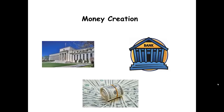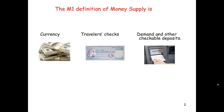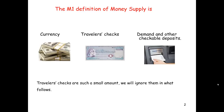Let's begin by defining the money stock we'll think about. That's the M1 definition of money supply, and it's equal to currency plus traveler's checks plus demand and other checkable deposits. Traveler's checks are such a small amount, we will ignore them in what follows.